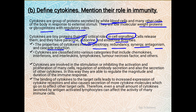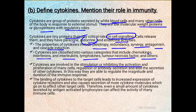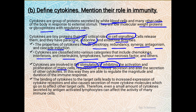Cytokines are classified into various categories including chemokines, interferons, interleukins, lymphokines, tumor necrosis factors, and others. Cytokines are involved in the stimulation or inhibition of immune activation. Their work is either stimulatory or inhibitory — stimulatory meaning they activate other cells, antibody secretion, or generate immune response. When there is a need to suppress or end the immune response, some cytokines are released to regulate the magnitude and duration of the immune response.